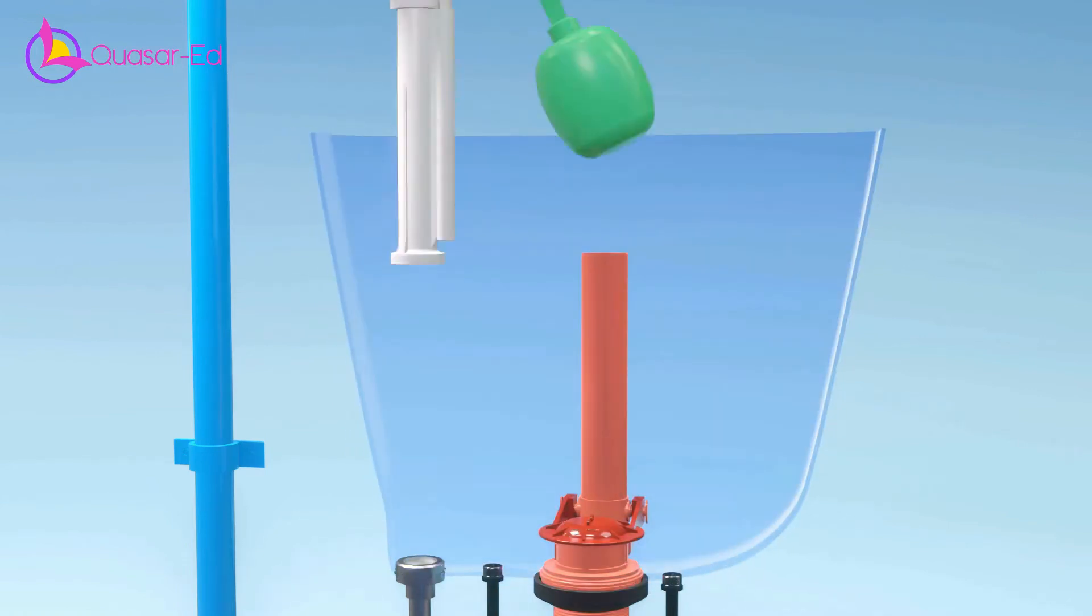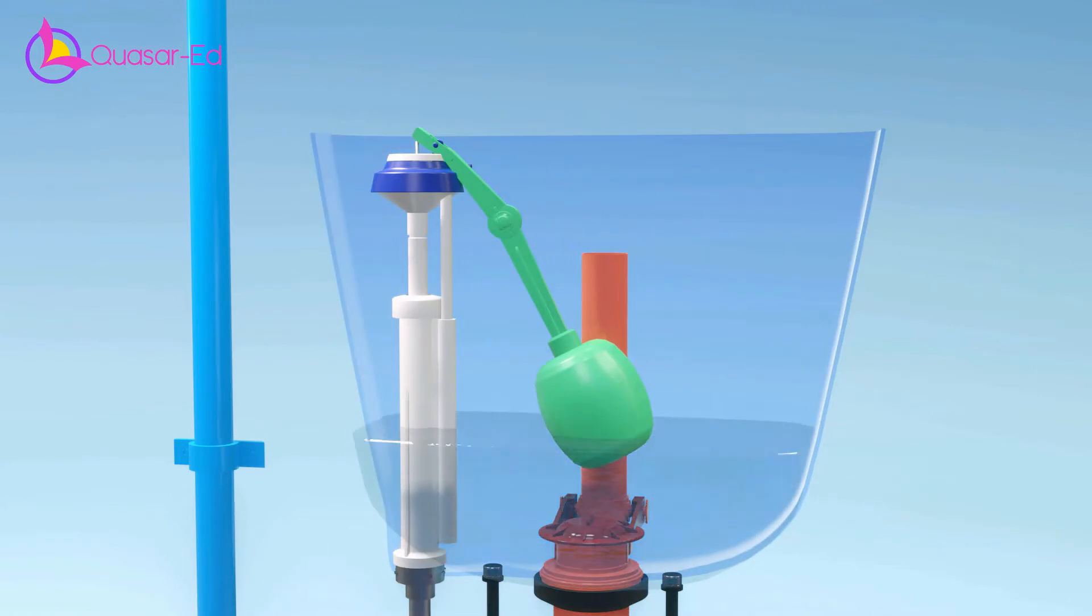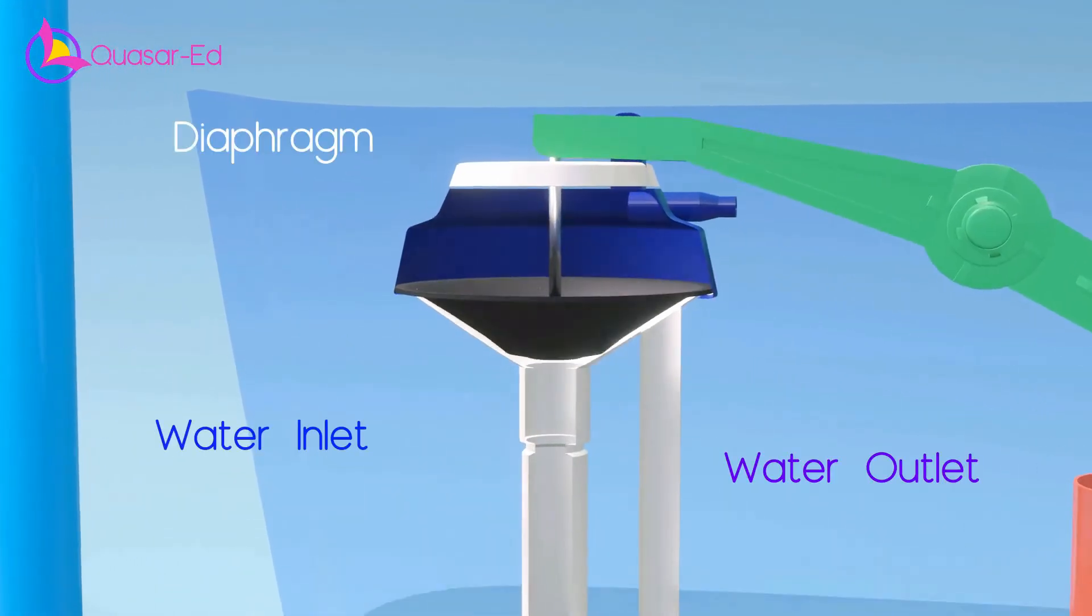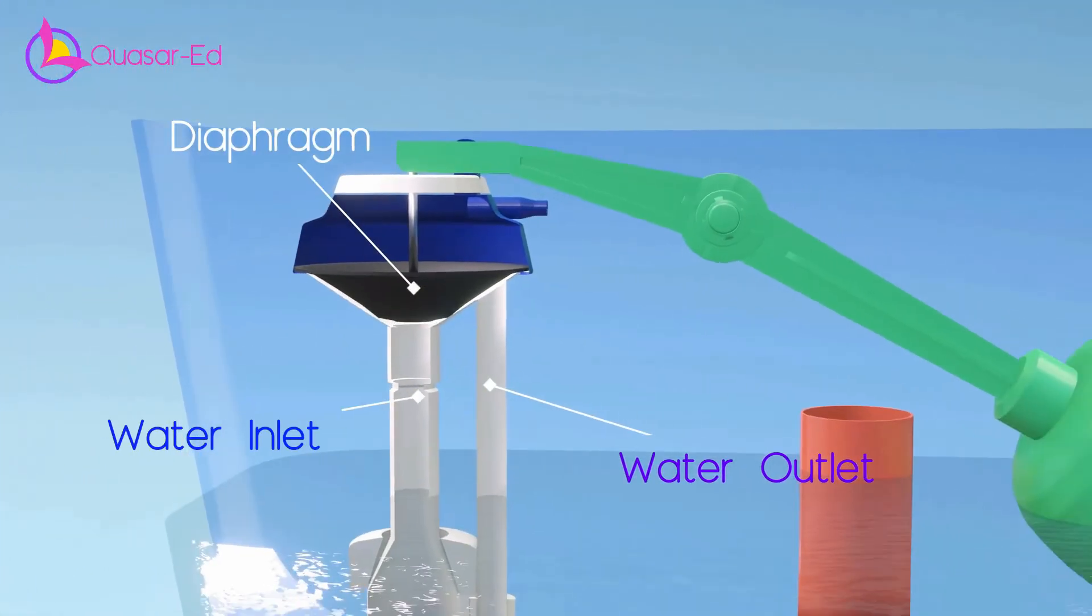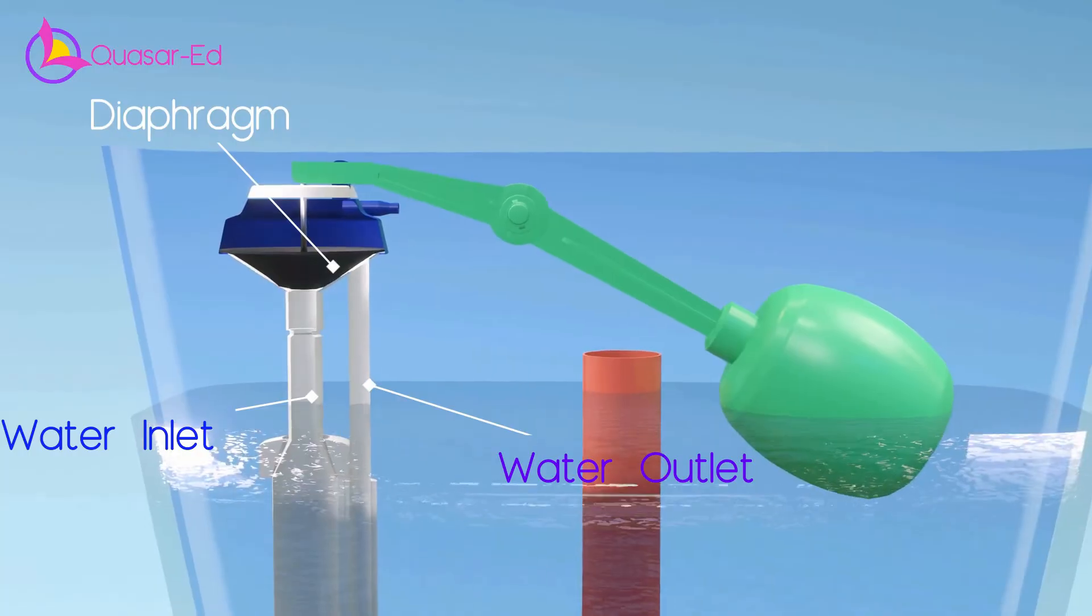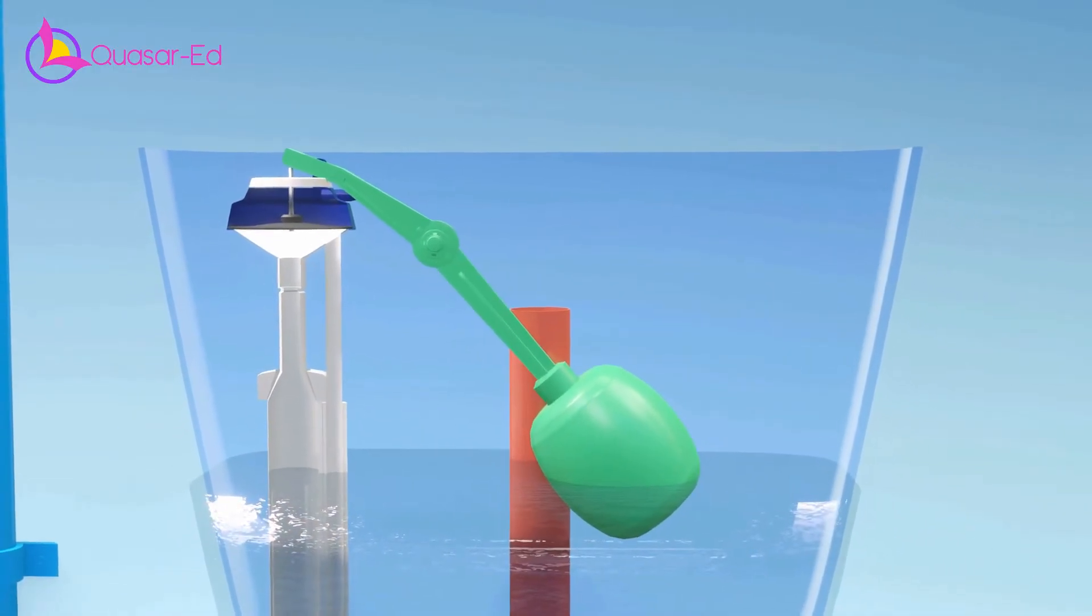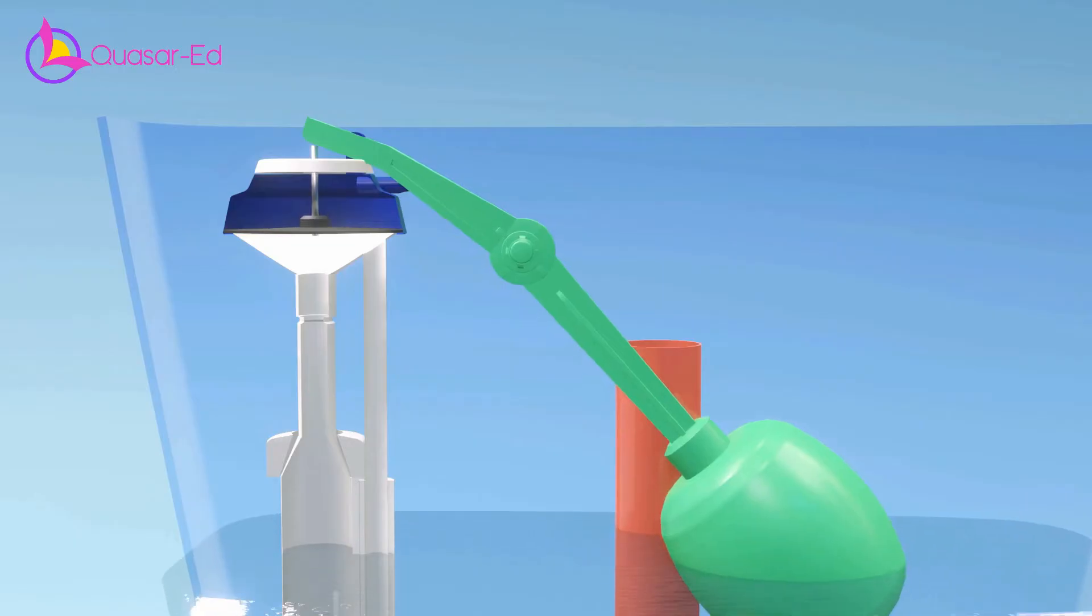For that, a float valve is used inside the toilet tank. A float valve could be a ball connected to a lever and the lever is used to pull or push the diaphragm that controls the water inlet. By this arrangement, when the water level rises to a certain height, the lever will push the diaphragm and closes the water inlet.